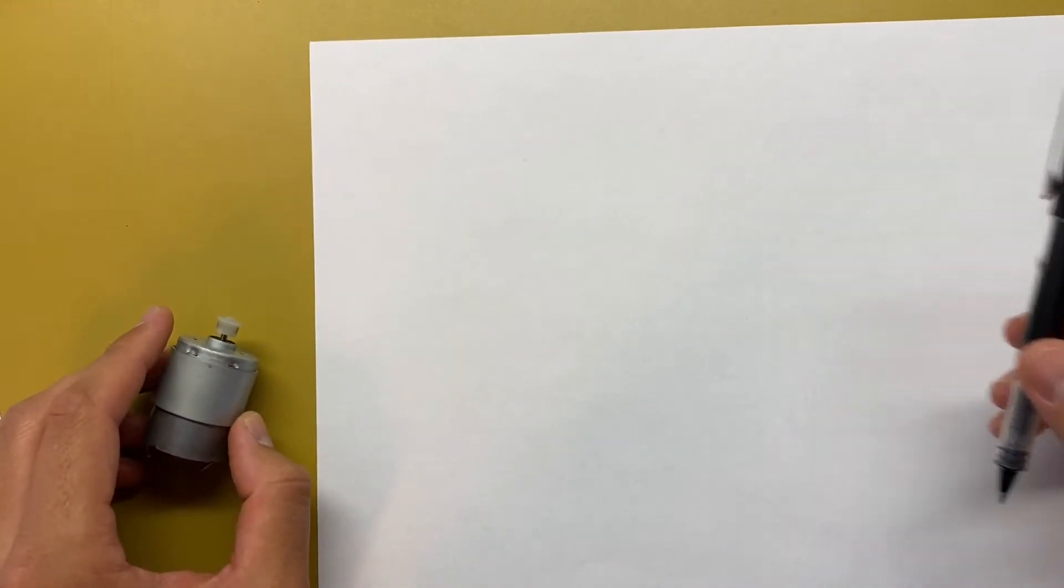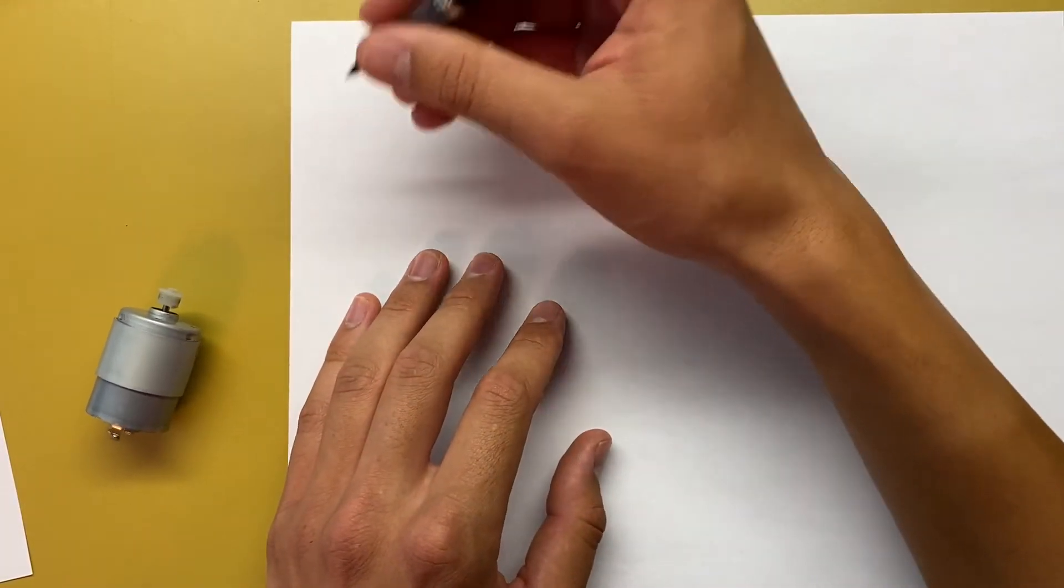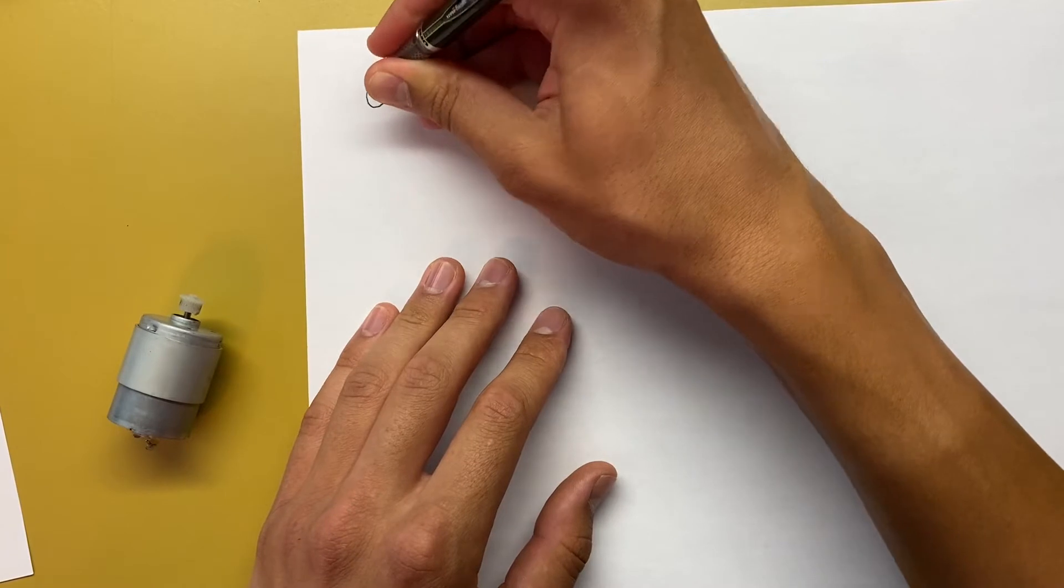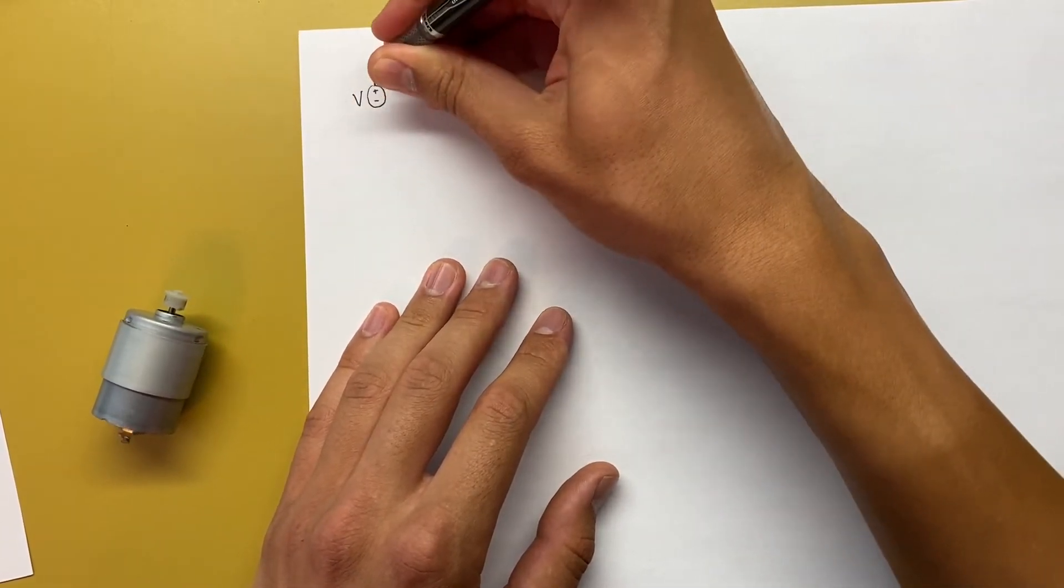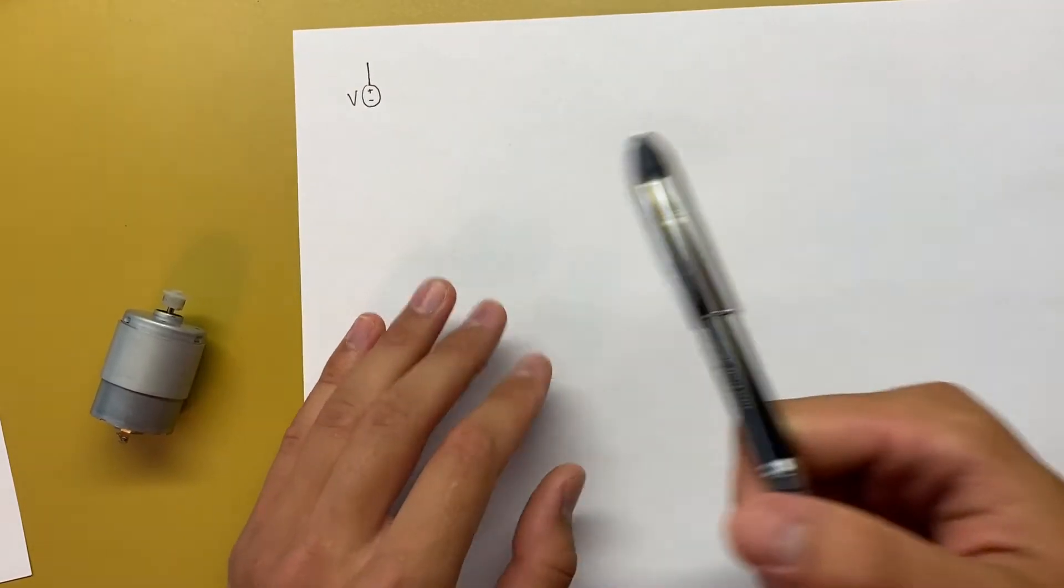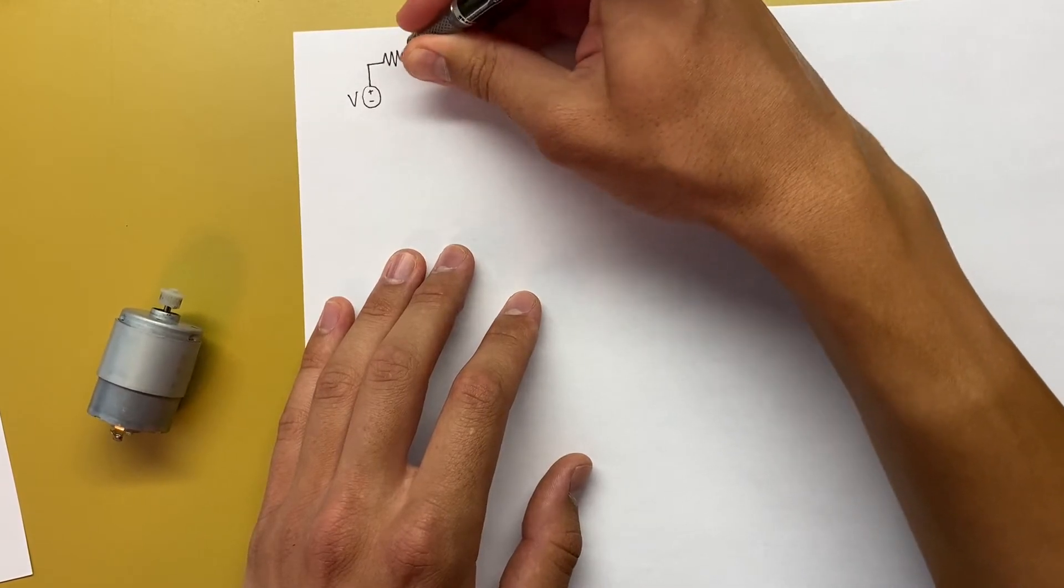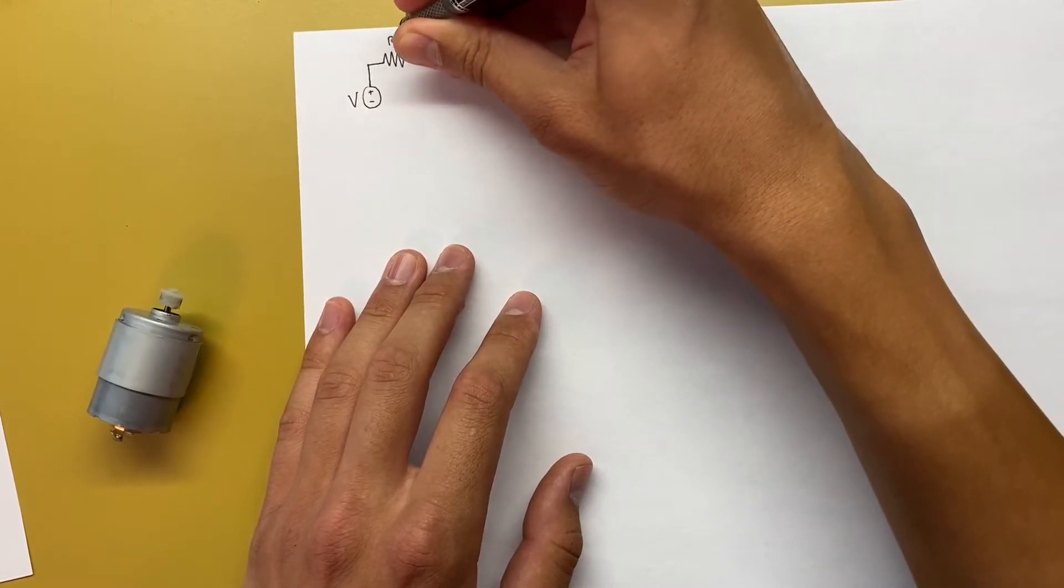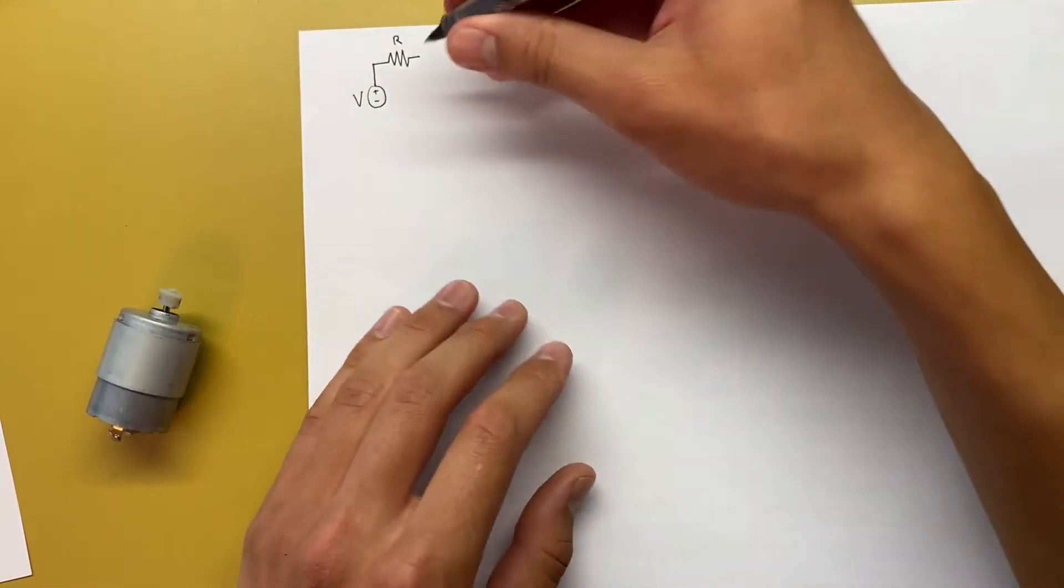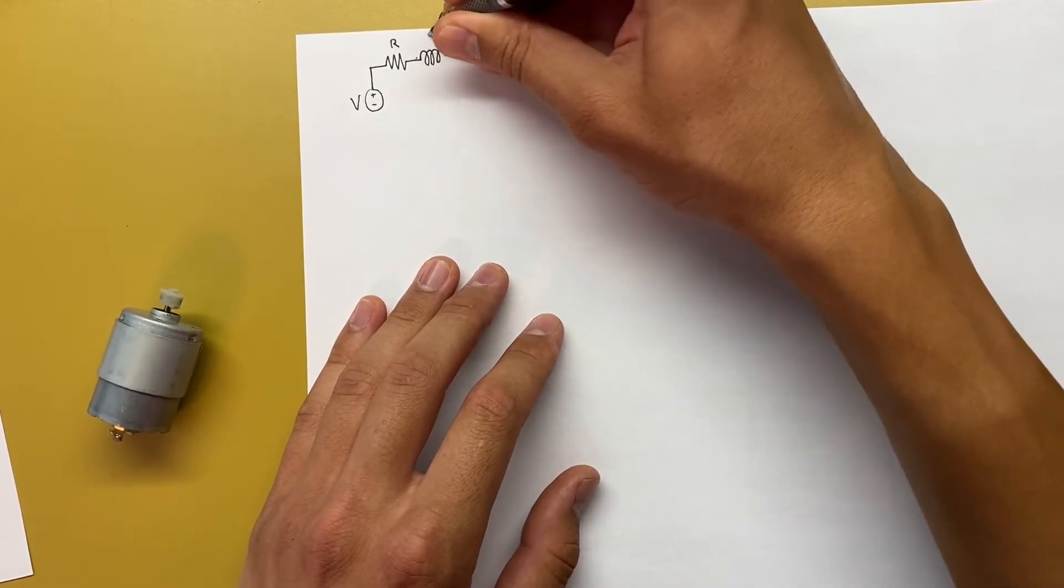So to start, we'll draw the circuit for a DC motor. We know that we have to put in a voltage to make it turn, so we'll represent that with just a plain old voltage source. We know that there's a bunch of wire in here, and wire always has resistance, so we'll go ahead and draw a resistor, call that R. We also know that that wire is wrapped in coils, and coils have inductance, so we'll draw an inductor, call that L.